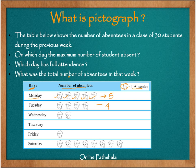What was the total number of absentees in that week? We have to count for each day and add them together. Monday was 5, Tuesday was 4, Wednesday was 2, Thursday had no absentees, Friday was 1, and Saturday was 8. So 8 plus 10 is 18, plus 2 is 20. In the previous week, there were 20 students who were absent.